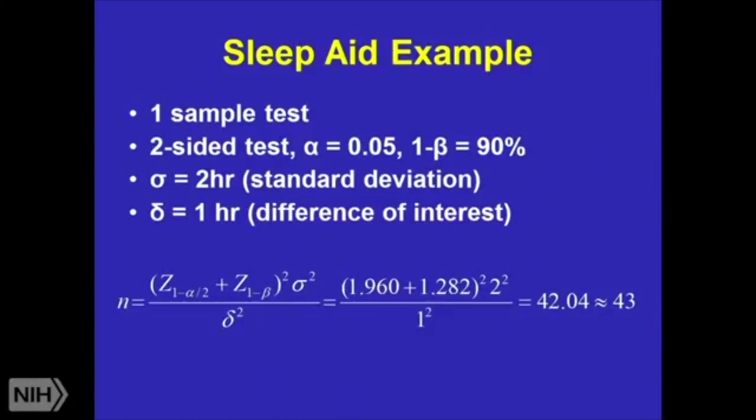So now I've got my equations, I've got this one sample test, you'll notice that there's no four in front of this. That's because the two and the two before were because we had a two sample test, so two times two equals four, which is why that four is there usually. But I have kind of that critical value for my type one error, it's a two-sided test so it's divided by two, critical value for the power, variance, and the difference of interest.